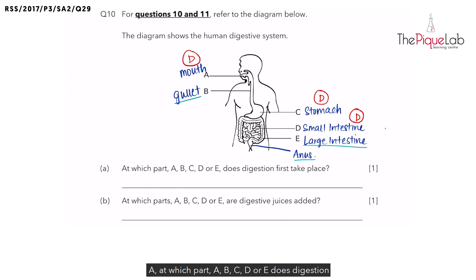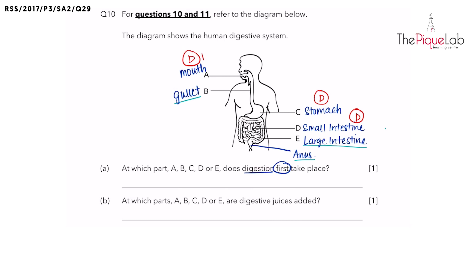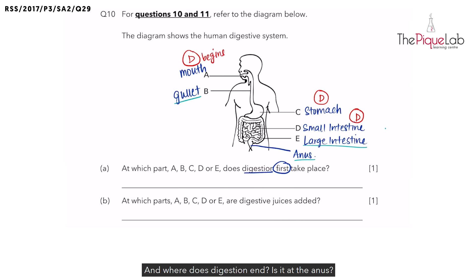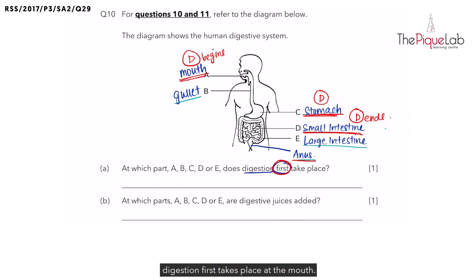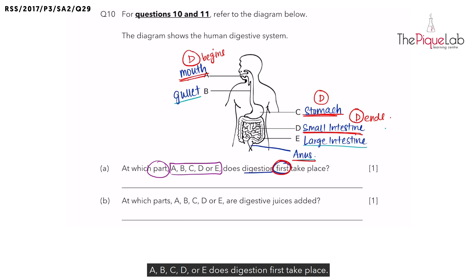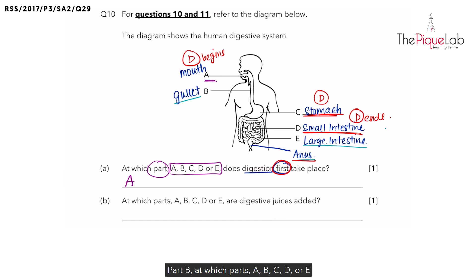Now let's look at question A: at which part — A, B, C, D, or E — does digestion first take place? Basically the question is asking where digestion begins. Yes, digestion begins at the mouth. But do we write 'mouth' in the blank? No — remember the question asks for which part A, B, C, D, or E. According to our diagram, the mouth is part A, so the answer is A.